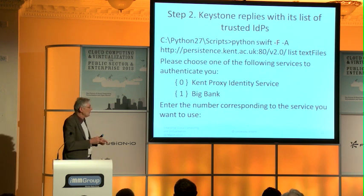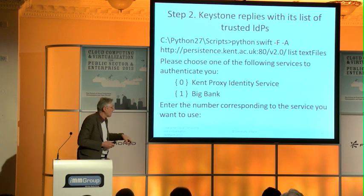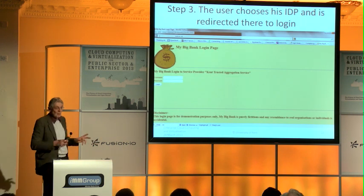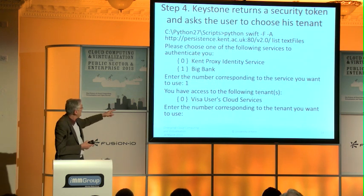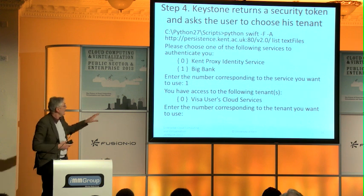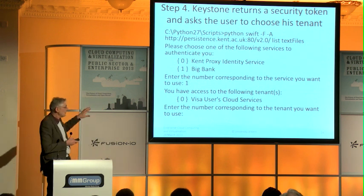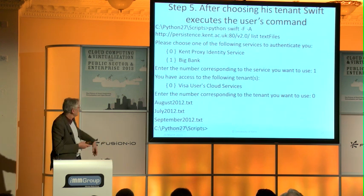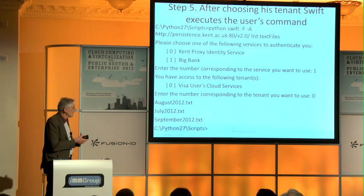Keystone says back to the user: you want to do federated login. I've got two identity providers registered with me — the Kent proxy identity service and BigBank. Who do you work for? Which one do you want to log in with? In this case we chose BigBank. You get redirected to BigBank, BigBank brings up its web browser screen, you type in your credentials, and log in. You're then back in Keystone, which says: I've got the credentials from BigBank, I know your attributes, and you're now entitled to use the following tenants. There's one tenant — choose it. I want to use the Visa service from BigBank, so I choose it and it comes back listing the August, July, and September files available. You can then list contents, etc. That's just a demonstration of how we built it — it becomes very easy for users.